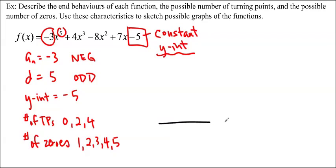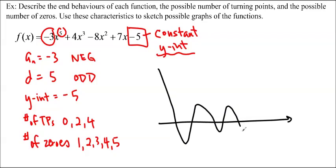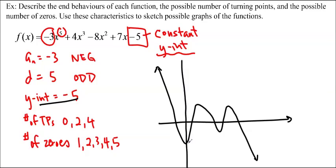I'm going to use that information to draw a possible sketch. It's not necessarily accurate. The function has to start at the top going down — it's got a negative leading coefficient and odd degree. I'll draw it with 4 turning points and 5 zeros, and place my y-axis so the y-intercept is negative 5. It doesn't have to pass through a turning point. That's the basic graph with correct end behaviors, 4 turning points, 5 zeros, and the correct y-intercept.